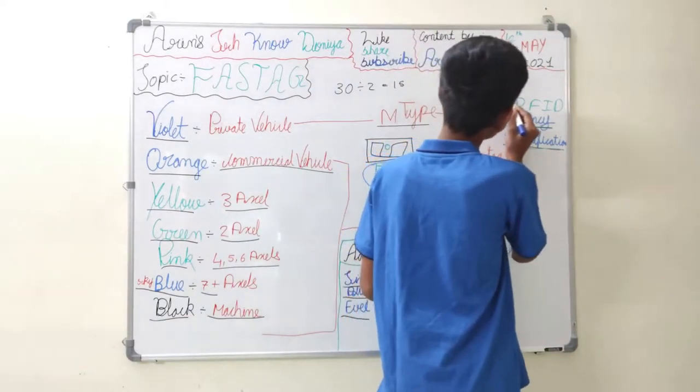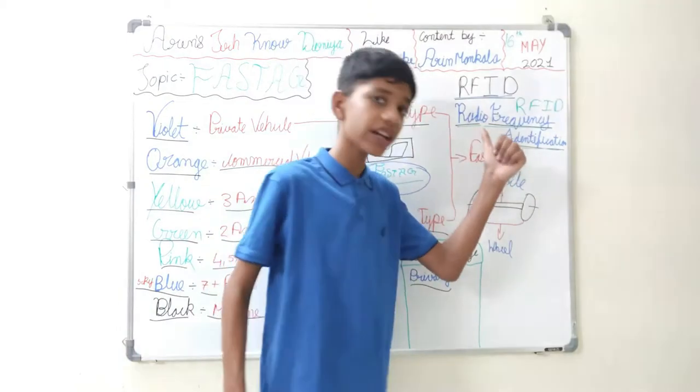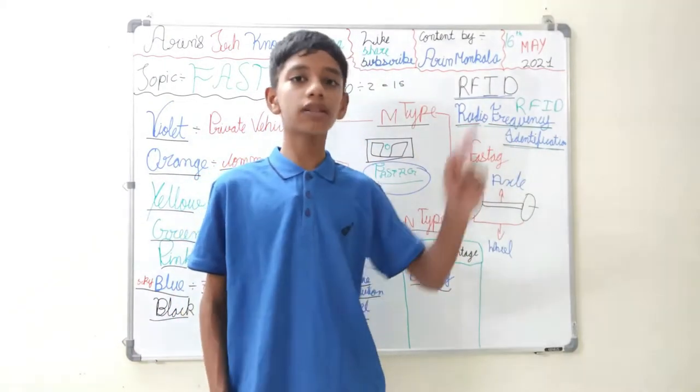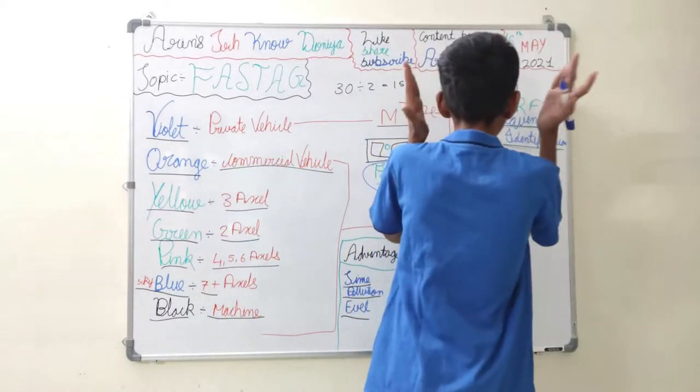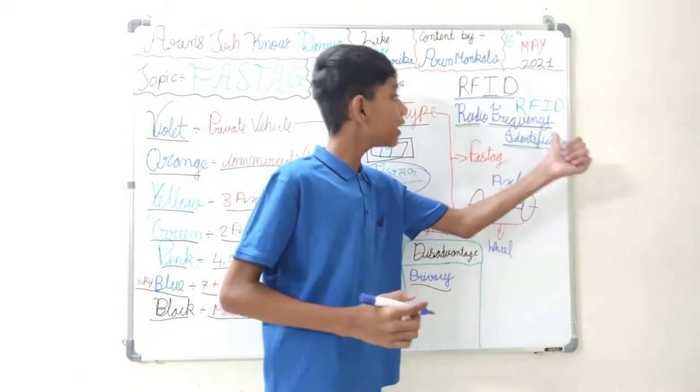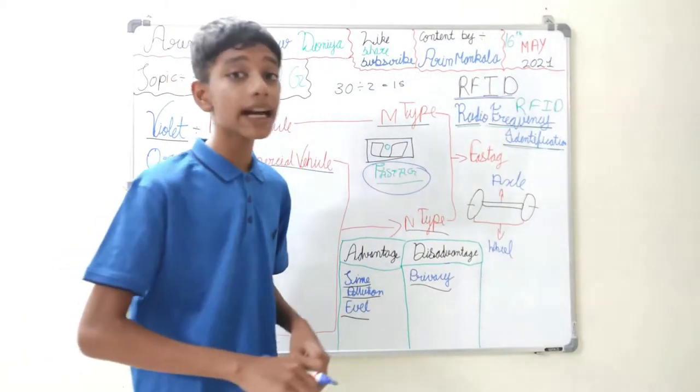FASTag works on RFID. RFID means Radio Frequency Identification. I have also made a dedicated video on that. You will find the link in the description box and in the i button above. So FASTag basically works on RFID, which means Radio Frequency Identification. It uses radio frequency to identify the tag.